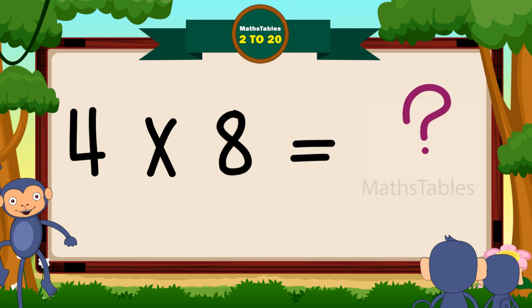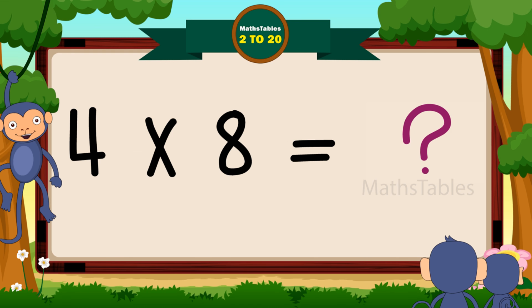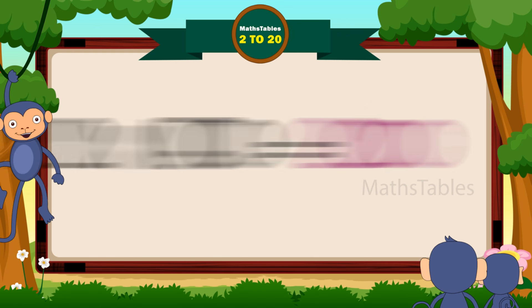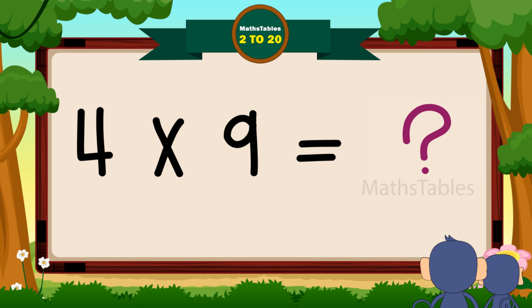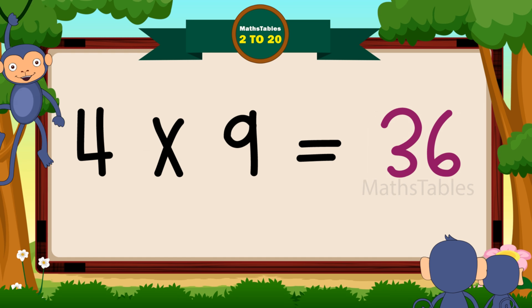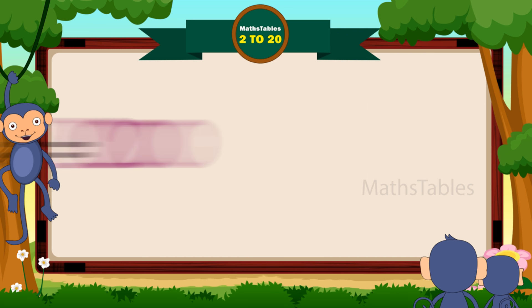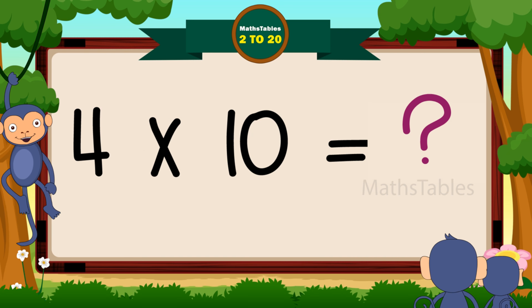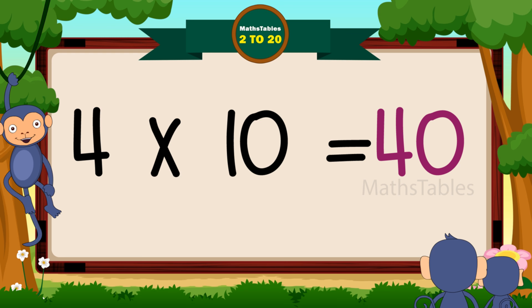Four eights are thirty-two. Four nines are thirty-six. Four tens are forty.